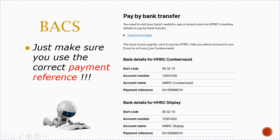You may also sometimes get a payslip in the post from HMRC, and that will tell you which account to use. But if you're not sure, just use Cumbernauld. You can also take the payslip to the bank and pay your tax and national insurance that way. A lot of people are just getting email communications now, don't have a payslip, and don't know how to pay — so if in doubt, choose Cumbernauld, use its sort code and account number, and use your own payment reference.